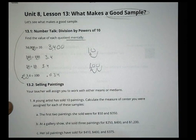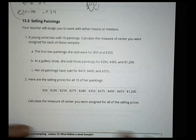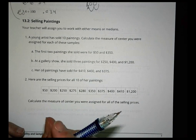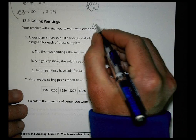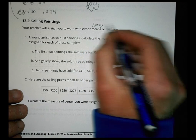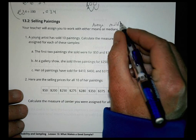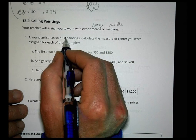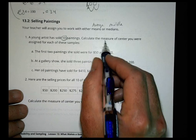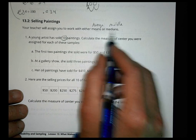Your teacher is going to assign you to work with either means or medians. The mean is the average — you add up the values and divide by the total count. The median is the middle value. The problem involves a young artist who has sold 10 paintings; calculate the measure of center you were assigned for each of the samples.